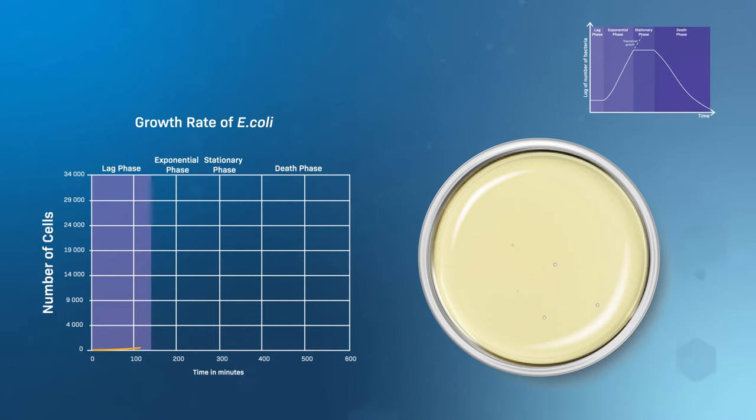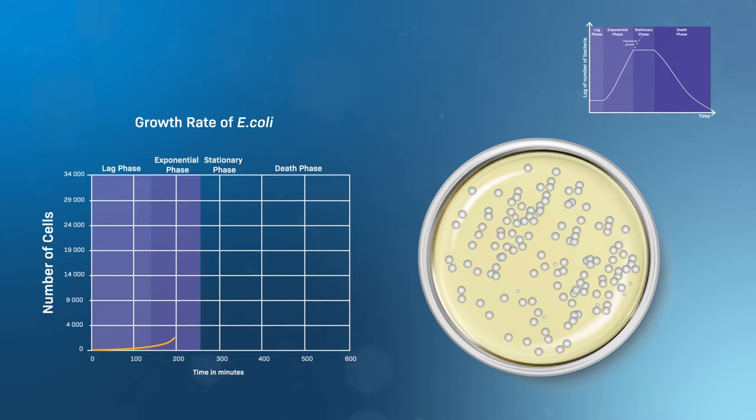Growth during the lag phase is slow because of the low number of bacterial cells replicating and the time needed for bacteria to synthesize the proteins needed for replication. After about the tenth generation, the cells go through exponential growth.